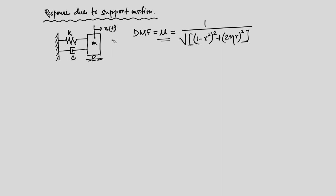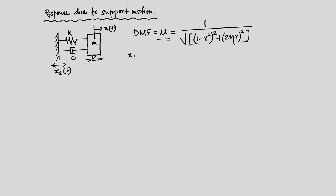Today, we are going to slightly modify the problem statement. Instead of applying force at the mass, we now have a support that is moving: x_s(t). There are different examples of this type of problem — for example, if you have a building that experiences support motion like an earthquake. So we investigate: if we have x(t) and x_s(t), where the subscript s stands for support motion, and this displacement is given by x₀ sin(λt).